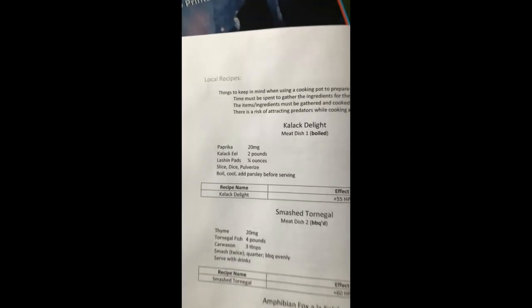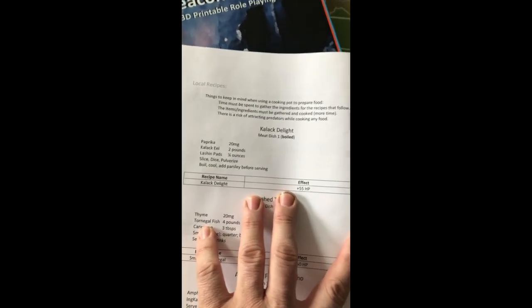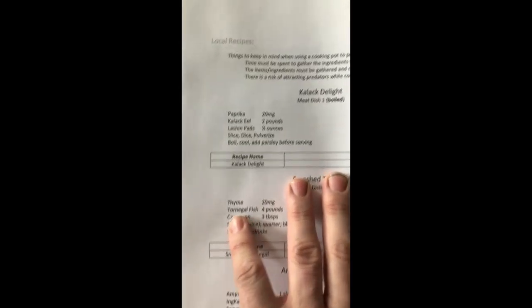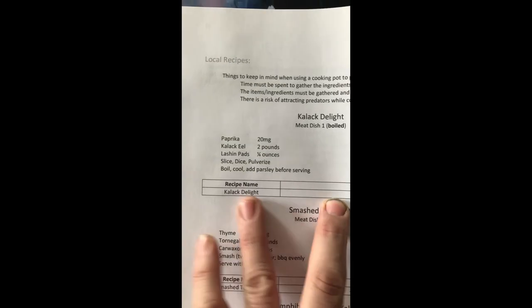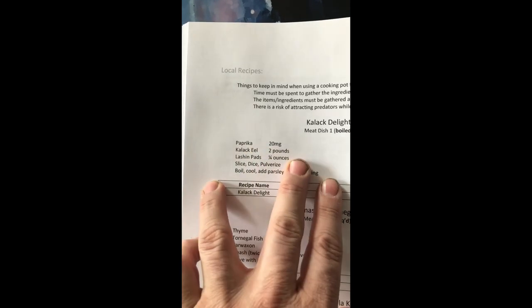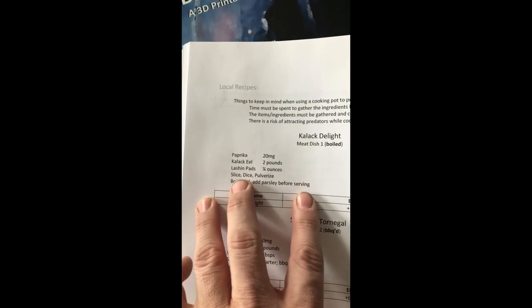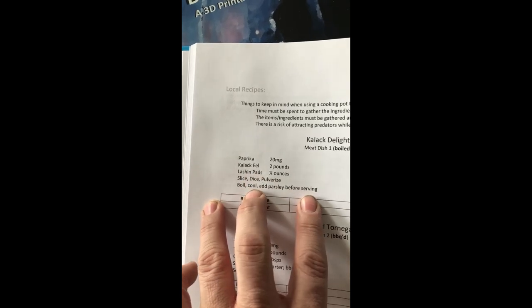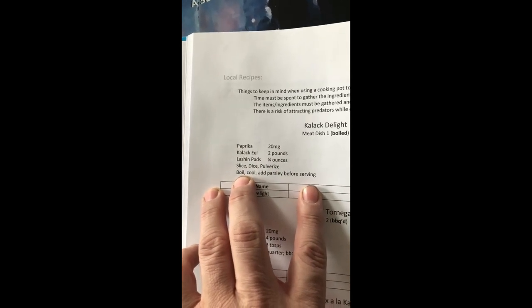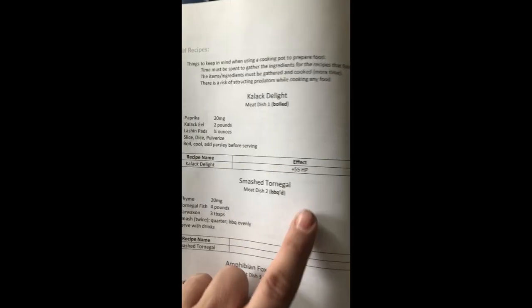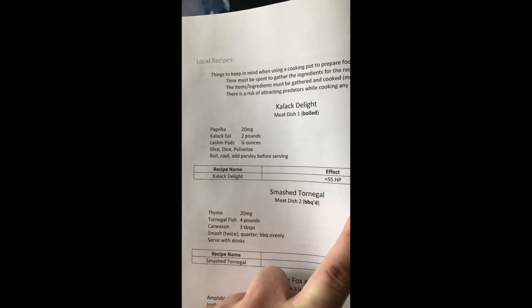Local recipes. If you're going to go harvesting on other worlds, the point would be not only for a single effect, but what if you want to make a meal? So you can actually make, collect Delight in this world. This is what you need. You buy the paprika in the store, but you need to get an eel. Get some pads. Slice. Dice. Pulverize. Because you've got to pulverize your food. Really? Boil. Cool. Add parsley before serving. I'm pretty sure the parsley just happens to pop into your back sack. I don't think you can buy parsley.